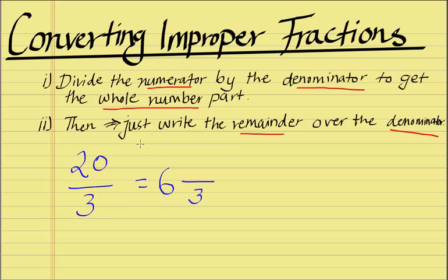So, if we go 20 minus 18, we have 2 as the remainder. So, we have 6 wholes and 2 thirds. This, right here, is our mixed fraction, or our mixed number.